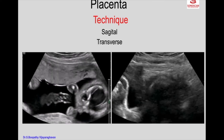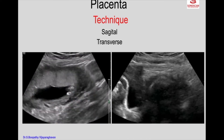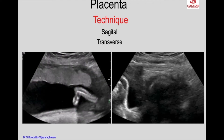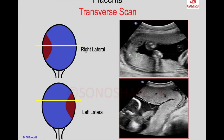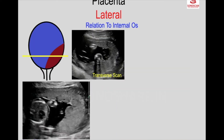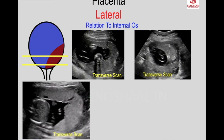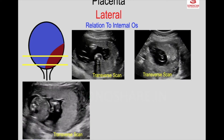This is the sagittal sweep from side to side. The placenta is lateral, and its relation to the internal os cannot be assessed — that is a disadvantage. To overcome this with a lateral placenta, you make a sweep transversely when the placenta comes down.